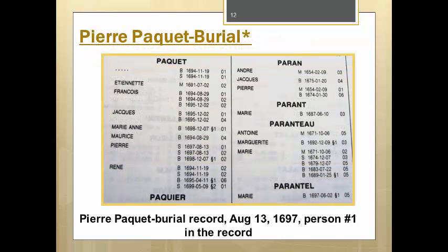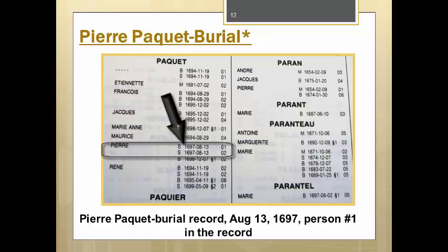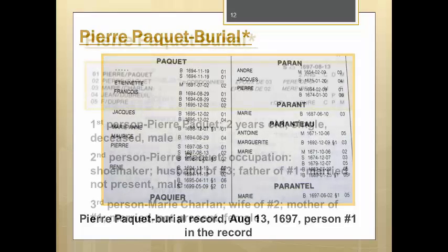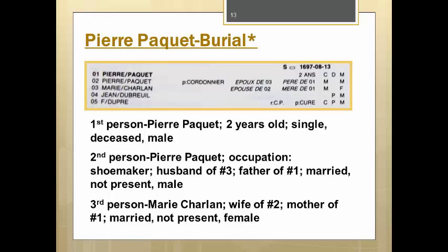Next we're going to take a look at the burial of Pierre Paquet. Notice there are two Pierre Paquets mentioned for this burial event, which takes place on August 13th, 1697. Notice the 01 and 02 at the end of each line. The 01 means that that Pierre Paquet is the person being buried — chances are it's a child, and the second Pierre Paquet would be his father. We look at the record and we see that that is correct. The child was two years old, single, obviously deceased at the time of the event, and male.